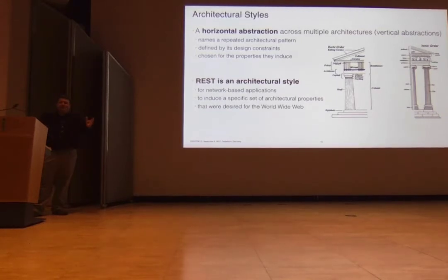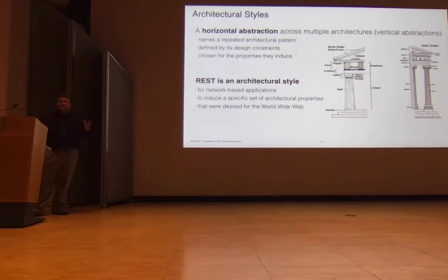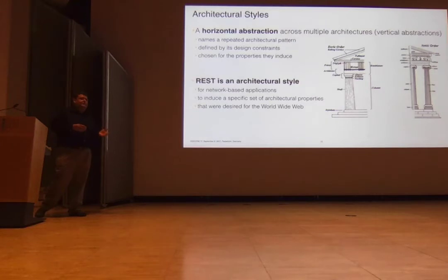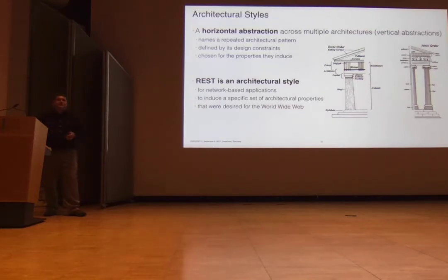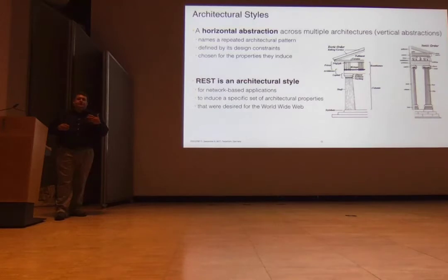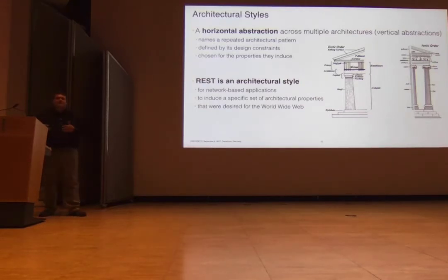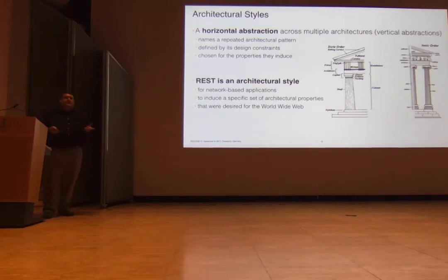Architectural styles are a horizontal abstraction across many architectures. It's not just one architecture — it's looking at many different architectures and finding common features, giving them a name so you can communicate about them, evaluate the good and bad characteristics, and identify the properties and trade-offs induced. We give it a name so we can have meaningful conversations and build a full set of knowledge and science about the design. It's not about mandating REST systems — it's about building systems that have the set of properties you want, knowing you can get there by using a particular style.